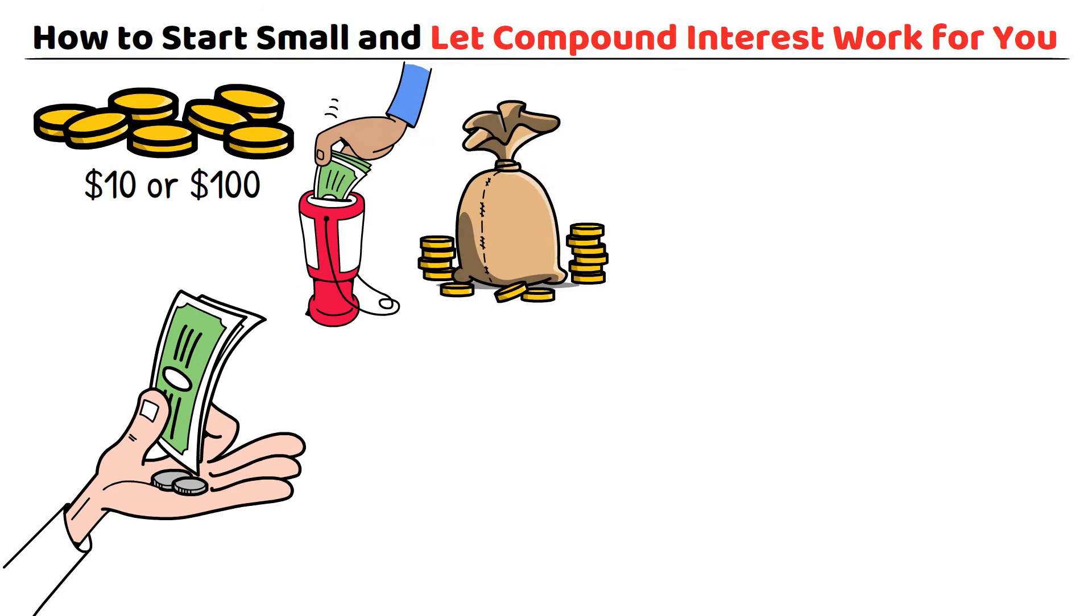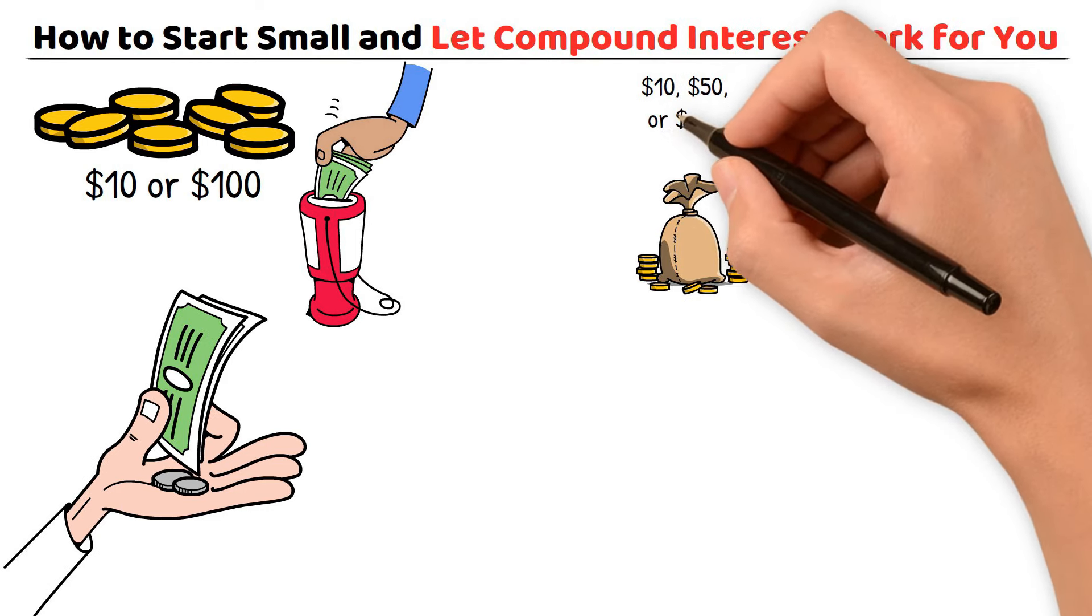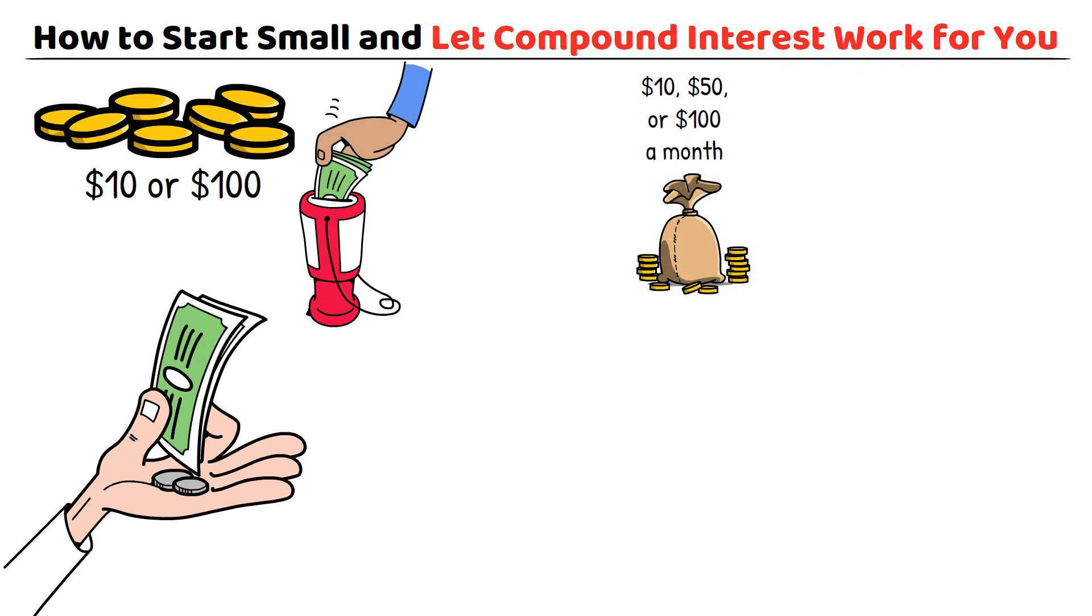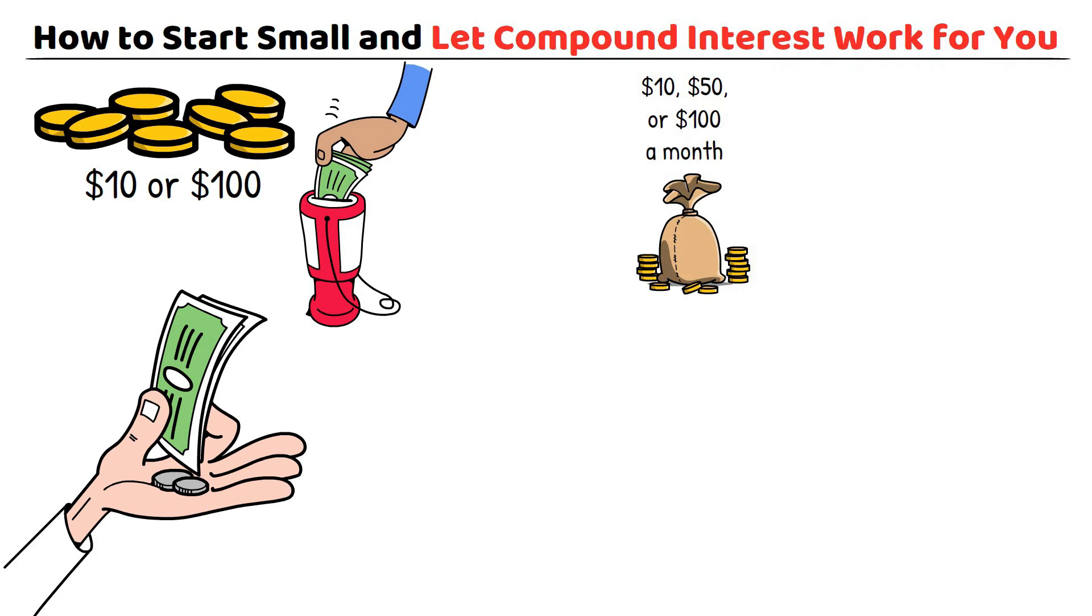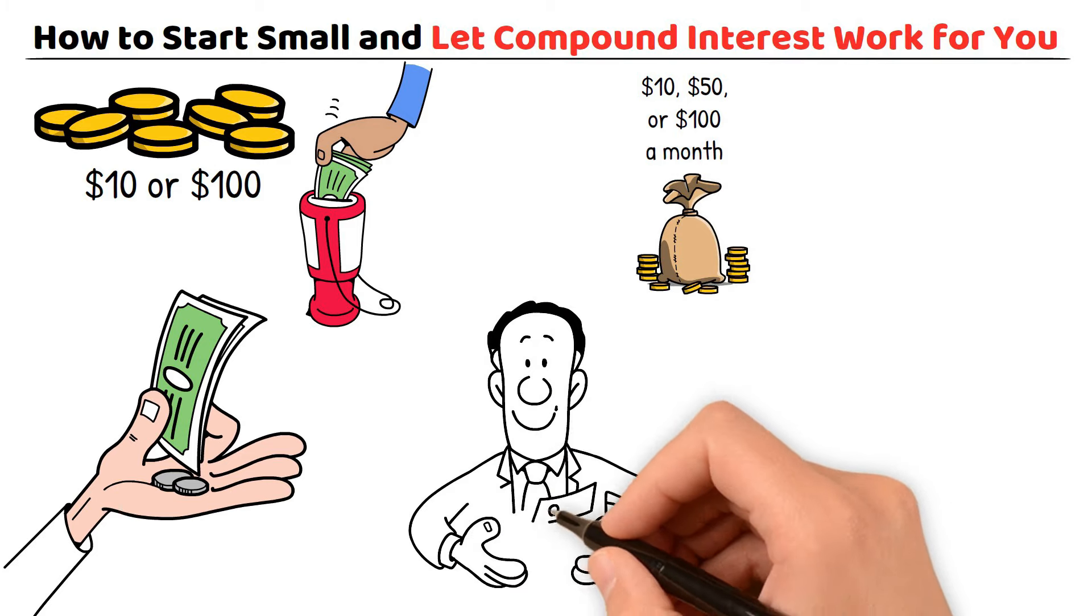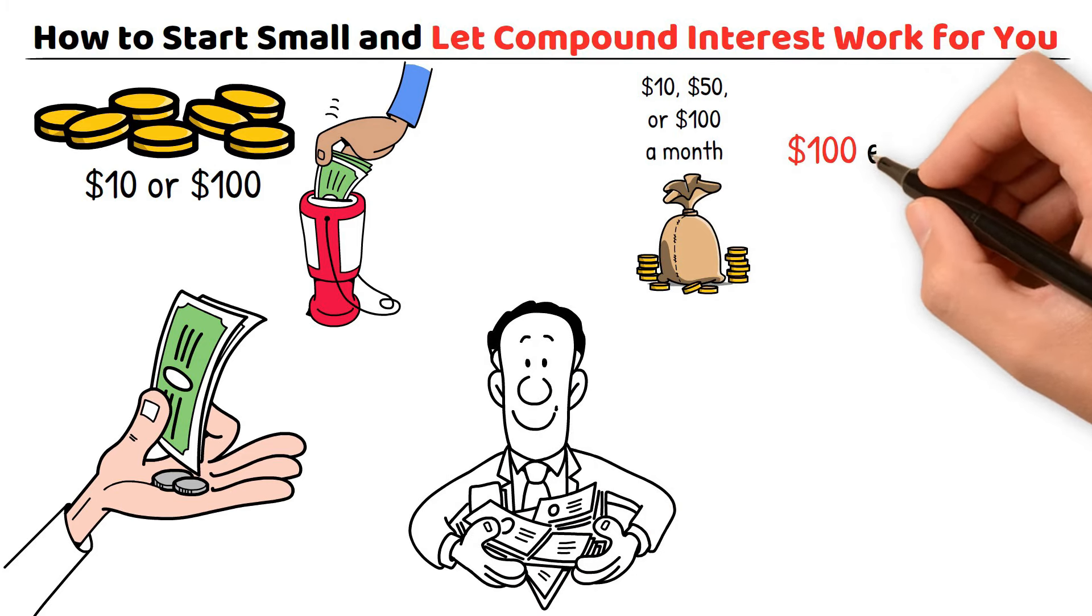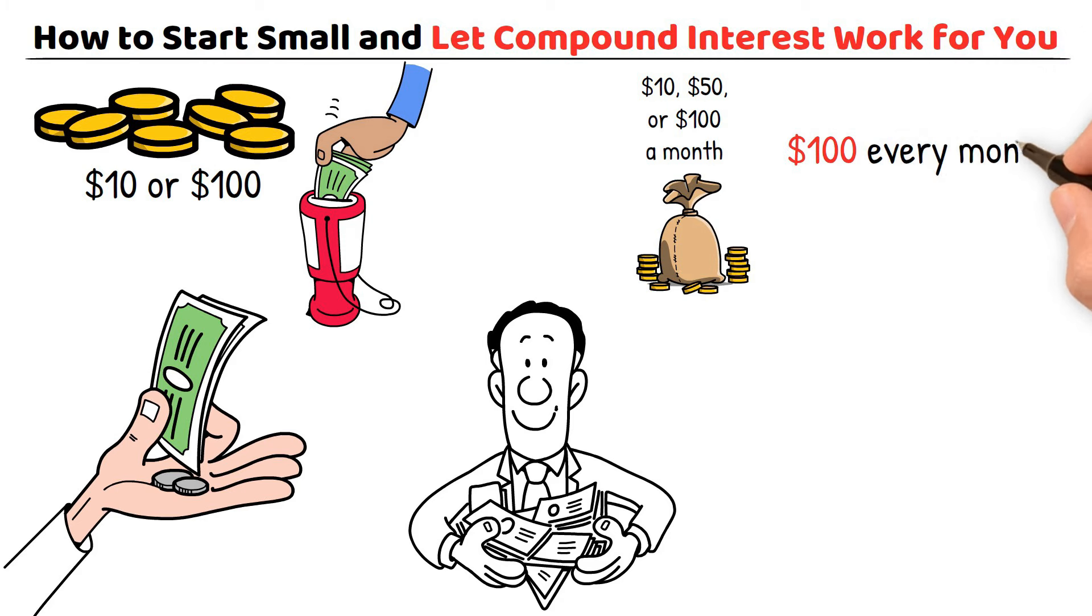Begin by setting aside a small portion of your income each month, aiming for an amount that's sustainable for you, whether it's $10, $50, or $100 a month. The goal is to make saving a regular part of your routine. As you continue saving, you'll notice your balance slowly growing. Let's say you're able to save $100 every month. In one year, that's $1,200.